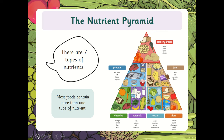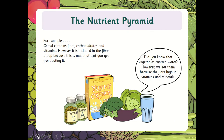You can pause if you want to make a note of something. Here we've got the seven types of nutrients: we've got carbohydrates, fats, fibre, water, minerals, vitamins, and protein. So there are seven nutrients which we get from food — really important for our body, which we get from our diet.